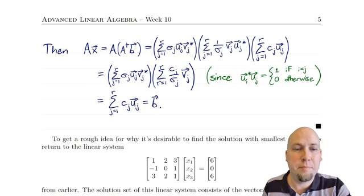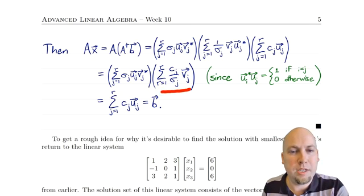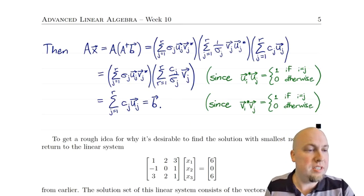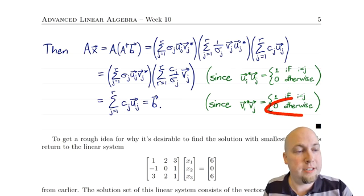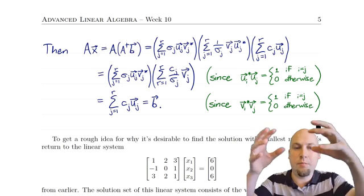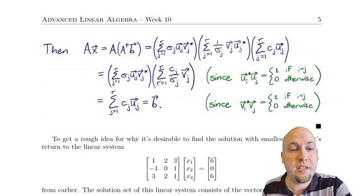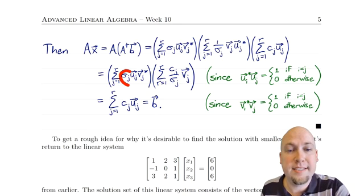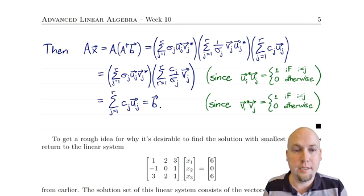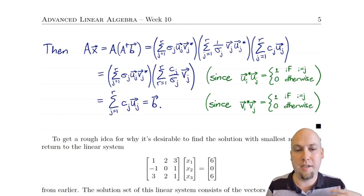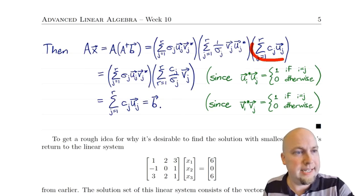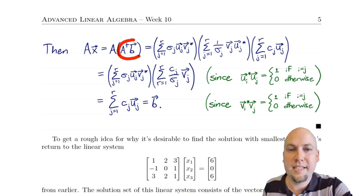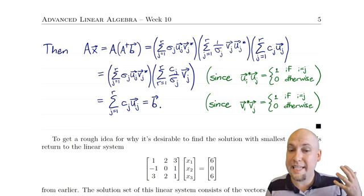Now do the same thing again for the remaining product. We get a Vj* times Vj term, which equals 1 when subscripts match and goes away otherwise. So instead of a double sum you just get a single sum. What remains is σj times cj/σj — the σj's cancel — leaving just cj. Combined with the Uj term, you're left with the sum of cj times Uj, which is exactly the sum formula for b we plugged in at the start. So Ax does equal b, confirming A†b really is a solution even if the inverse doesn't exist.